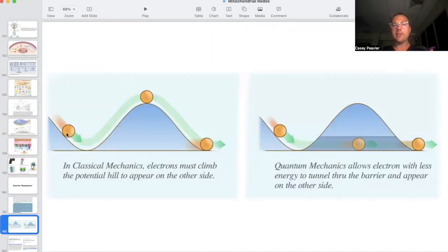We're going to do a little physics. In classical mechanics, electrons must climb up the potential hill to appear on the other side. It has to go up its potential energy gradient and then fall back down. However, in quantum mechanics, electrons with less energy can tunnel through the barrier and appear on the other side. So instead of climbing this hill and coming back down, it's actually going through the hill.